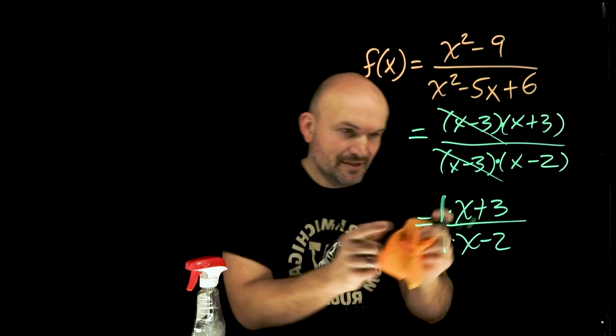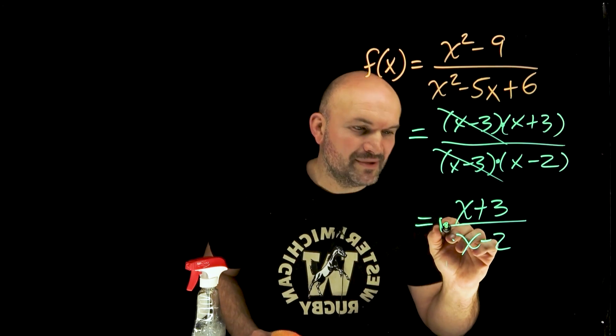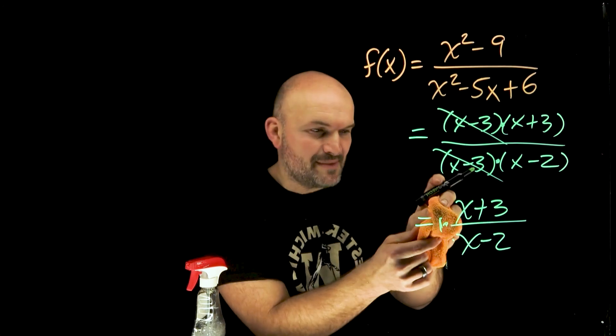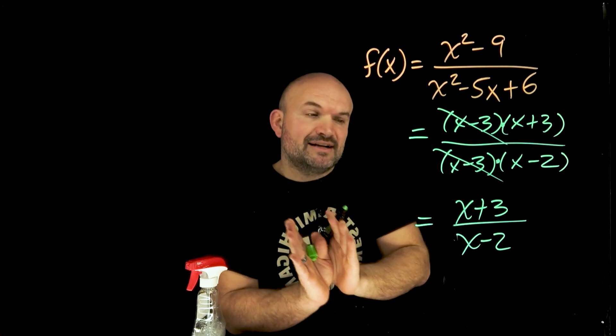Instead of writing it like this, you could also just say, well, maybe let's just put a nice little one right in front. But again, one times everything, one times the numerator, one times the denominator. It doesn't matter. It's there. We just know it's there, but it got removed from the simplified expression.